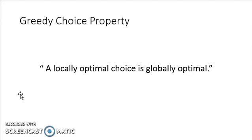The greedy choice property states that a locally optimal choice is globally optimal. This means that in a greedy algorithm, every local optimal choice we make is actually a part of some globally optimal solution. If you don't yet understand this greedy choice property, don't worry — we'll look at an example, find a greedy choice in it, and prove that the greedy choice is correct and is part of some optimal solution.